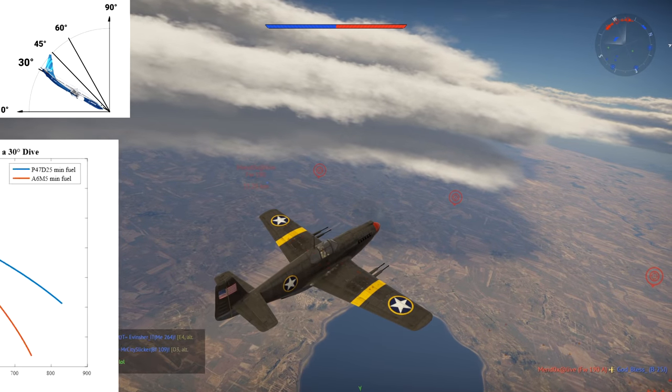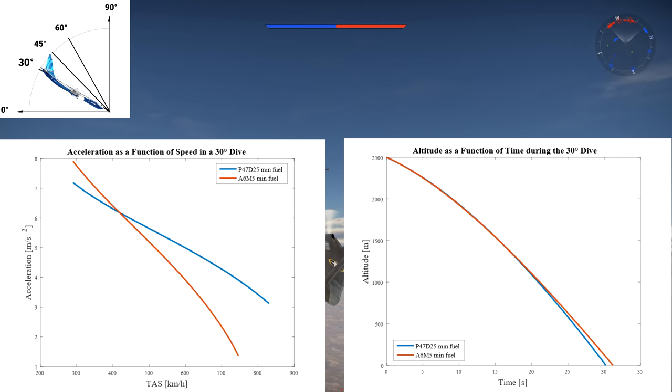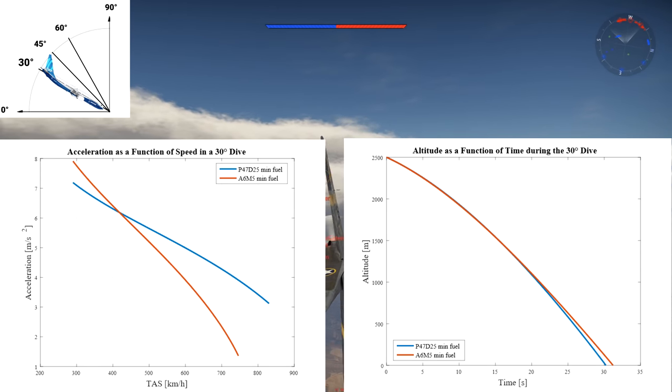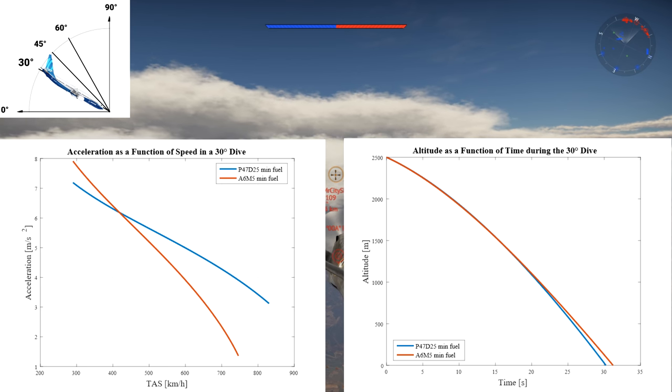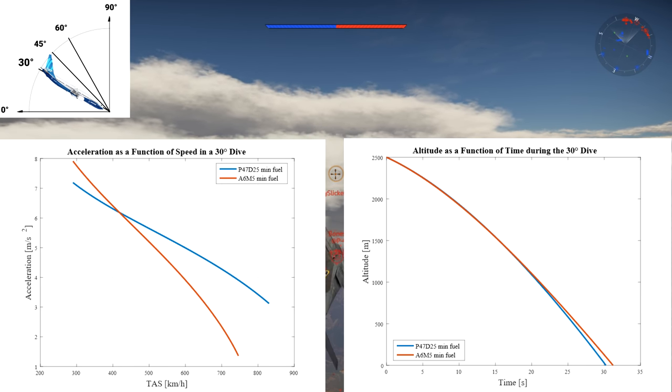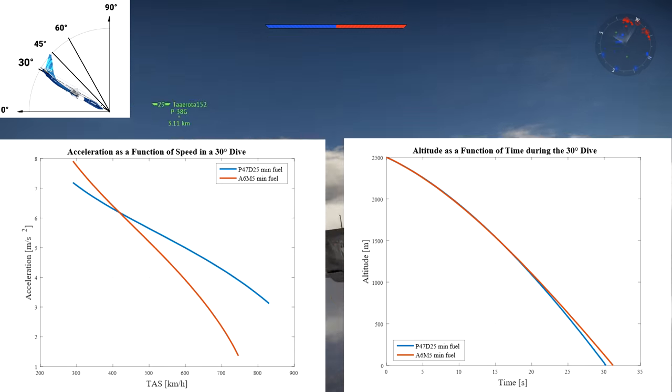Next up is the 30 degree dive. Again, the same tendencies appear. On the altitude as a function of speed graph, the P-47 now finishes the dive 1 second before the Zero in a 30 second dive, which translates to around 250 meters of separation at their speeds. The longer the dive, the better it is for the faster aircraft.